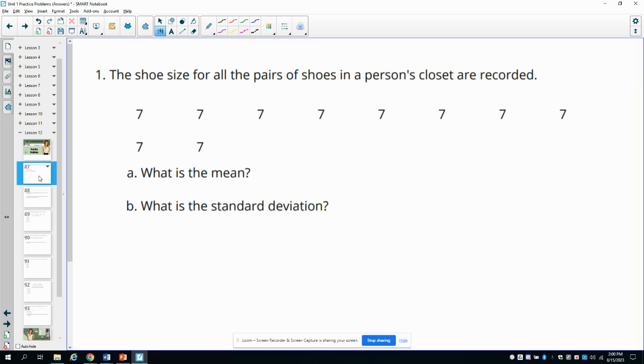Number one, the shoe size for all pairs of shoes in a person's closet are recorded. They're all sevens. What is the mean? So if we add these all up, divide by the number they are, it's going to be a seven since they're all the same. And what is the standard deviation? Well, there isn't any deviation because all of these values are the same, so the standard deviation would be zero.